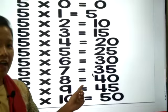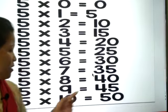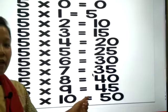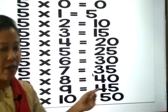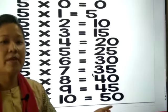5 7s are 35, 5 8s are 40, 5 9s are 45, and 5 10s are 50.